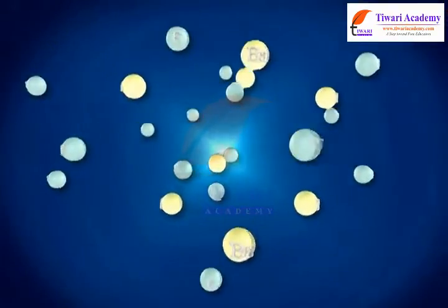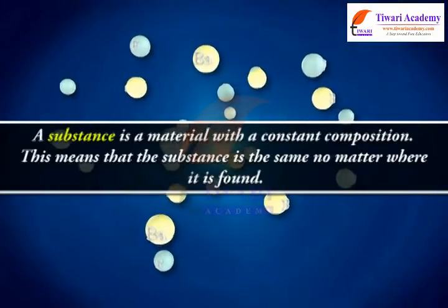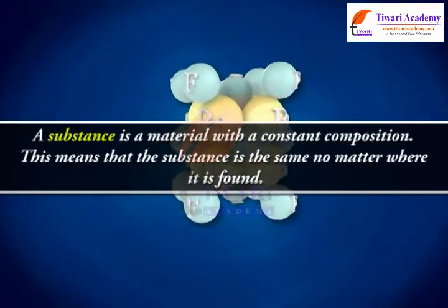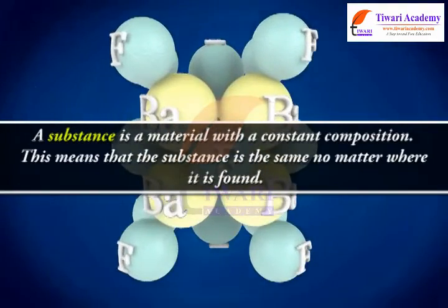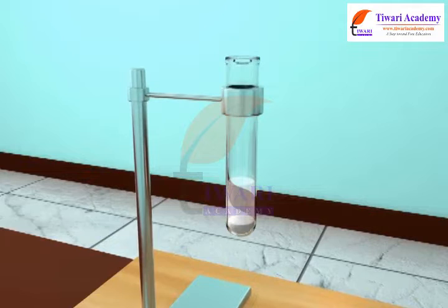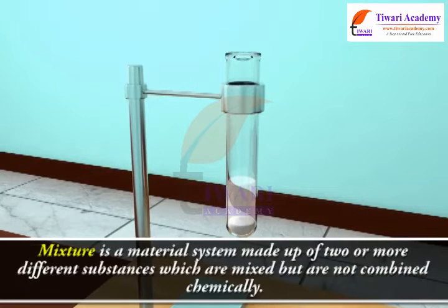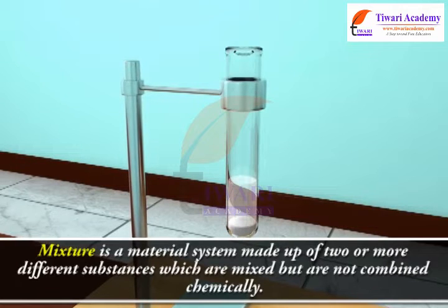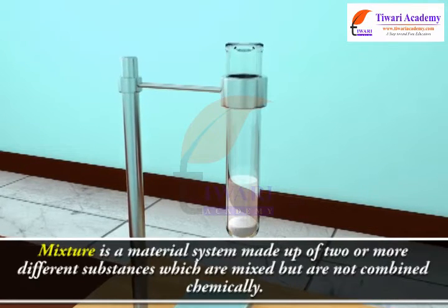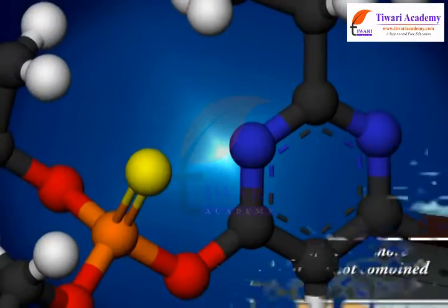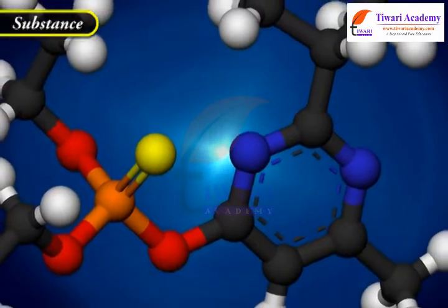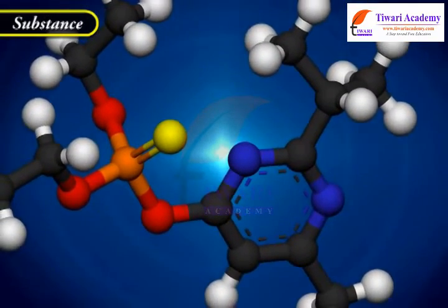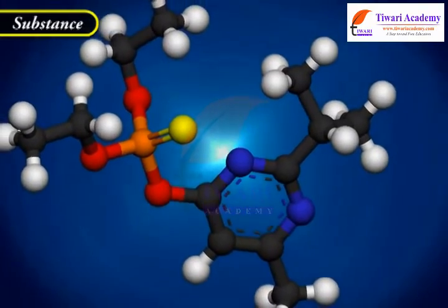A substance is a material with a definite chemical composition. In chemistry, a mixture is a material system made up of two or more different substances which are mixed but are not combined chemically. A substance is a material with a constant composition — this means that the substance is the same no matter where it is found.